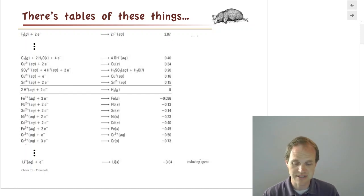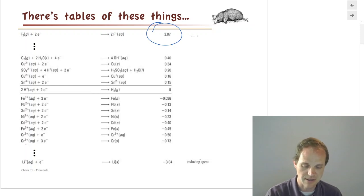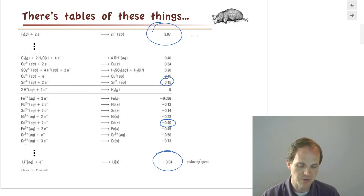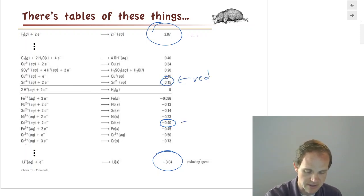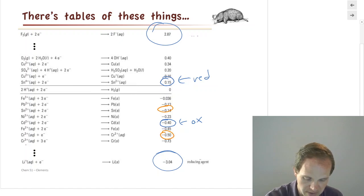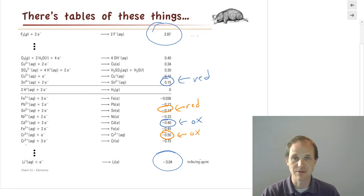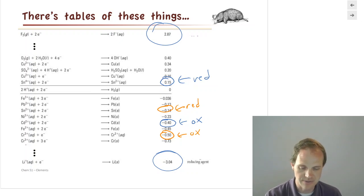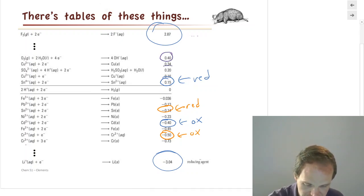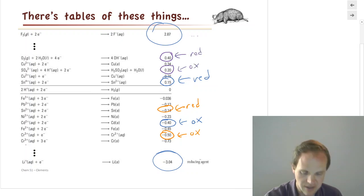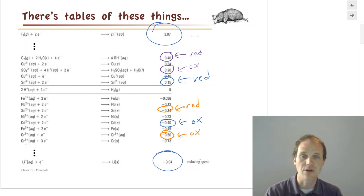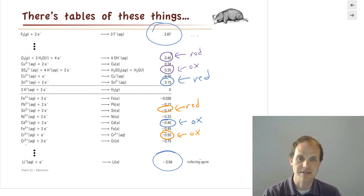In a table of standard reduction potentials, the species at the top is most likely to be reduced, and the species at the bottom is least likely to be reduced. So we can always compare two species: if one has a reduction potential of +0.15 V and another has -0.4 V, the first will be reduced and the second oxidized. If we compare -0.14 V to -0.5 V, the higher one gets reduced and the lower one gets oxidized. The species higher on the table with a larger reduction potential is always going to be reduced, and you should always get a positive cell potential.